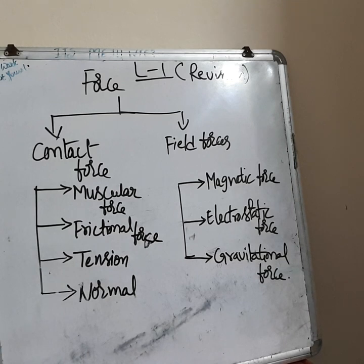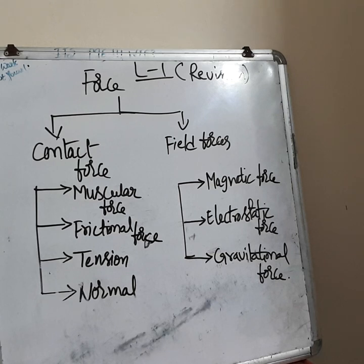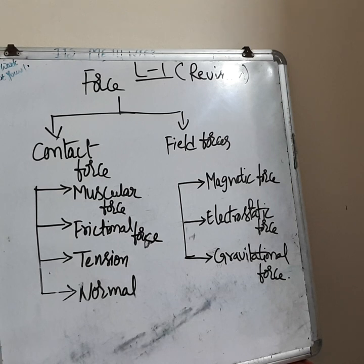Magnetic force is a field force. For this, there is an activity: observing the magnetic force using a bowl and a thermocol ball — go through the textbook. Electrostatic force is the force exerted by a charged body on another charged body. For example, when you rub a balloon with silk cloth and bring it near bits of paper, it attracts them — this is due to electrostatic force.